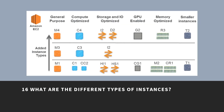What are the different types of instances? The different types of instances are: general purpose, compute optimized, standard and IO-optimized, GPU-enabled, memory-optimized, and smaller instances.